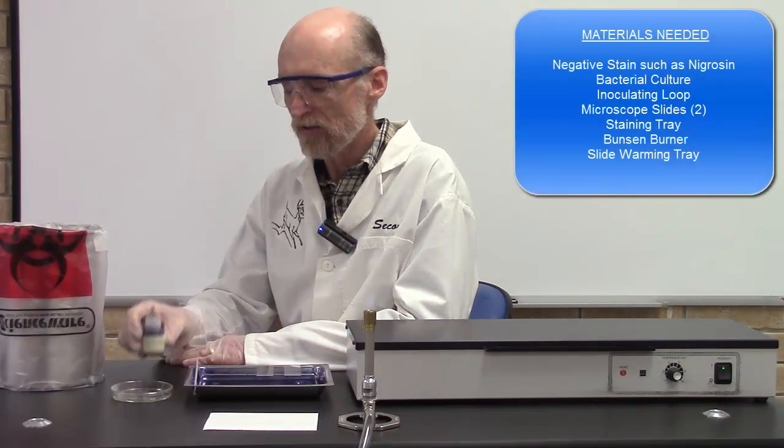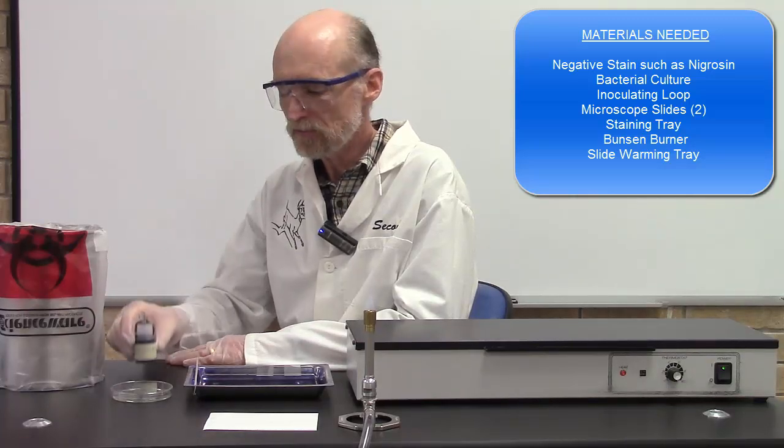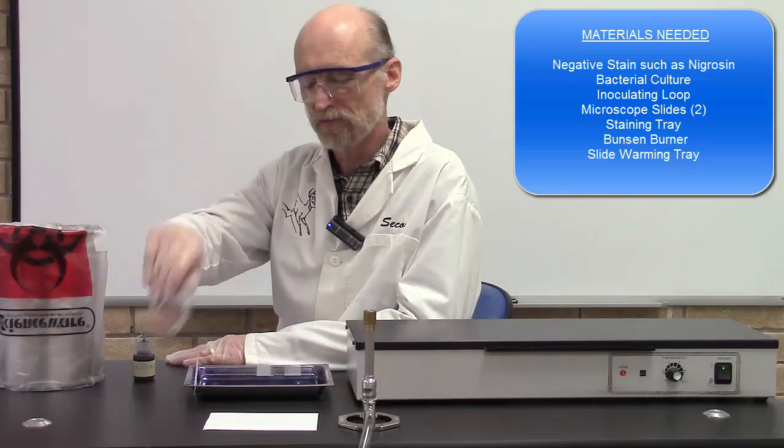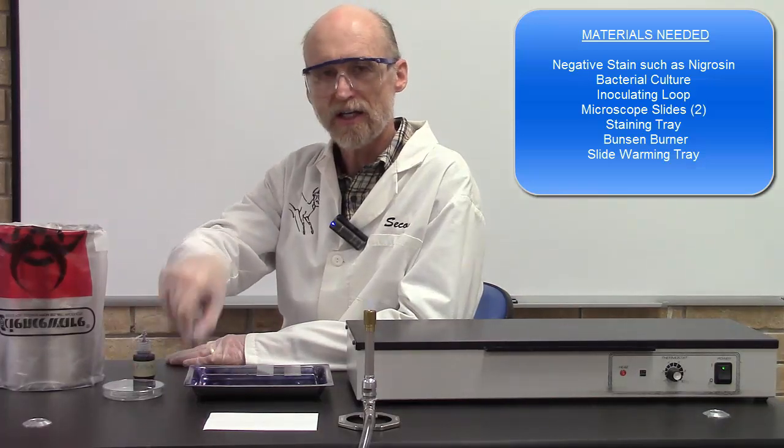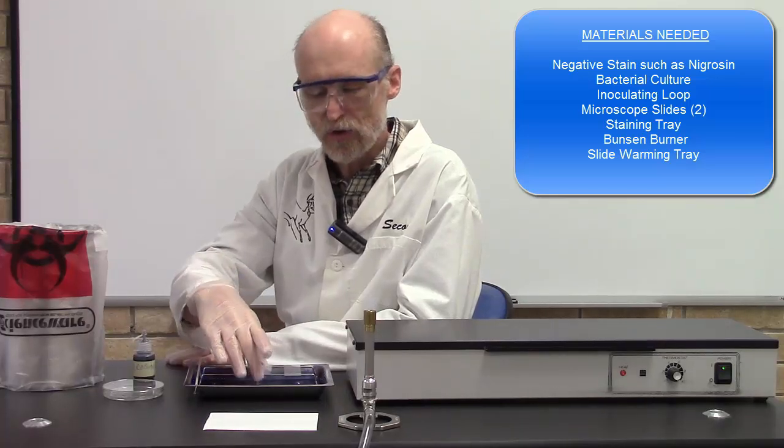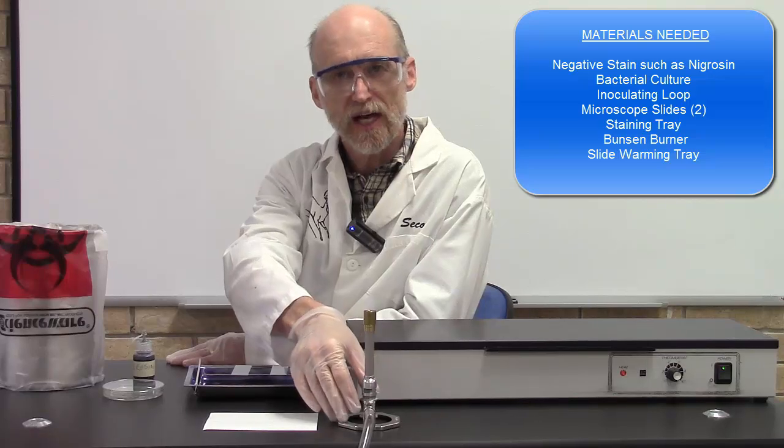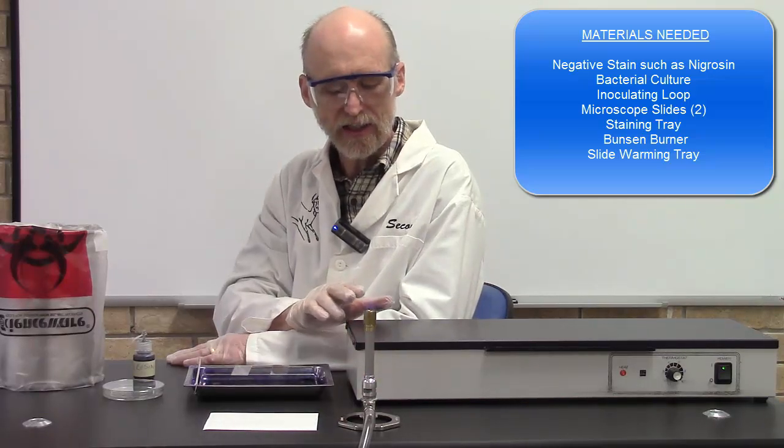You'll need a bottle of negatively charged stain. I'm using nigrosin. You'll need a bacterial culture, an inoculating loop, a staining tray, two microscope slides, a heat source to sterilize your loop, and finally, a slide warmer.